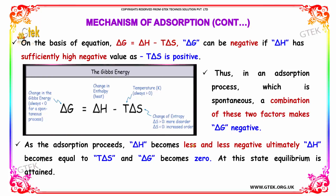As adsorption proceeds, delta H becomes less and less negative. Ultimately, delta H becomes equal to T times delta S, and delta G becomes zero. At this point, equilibrium is attained.